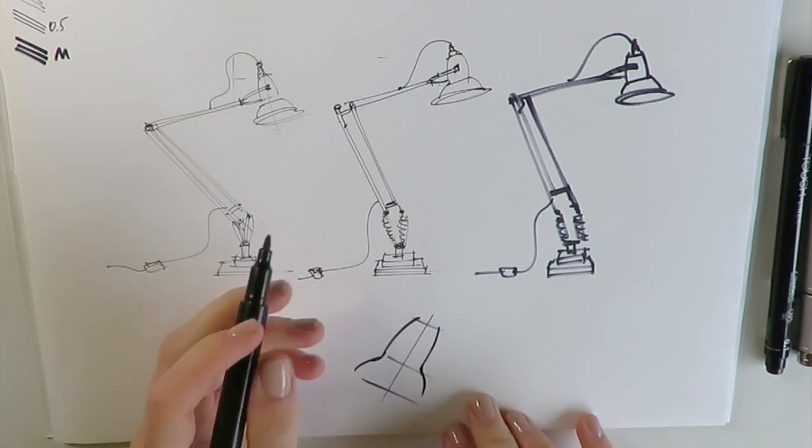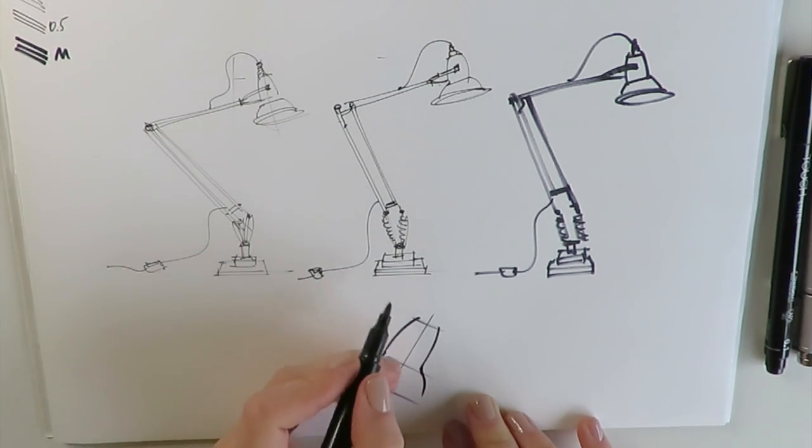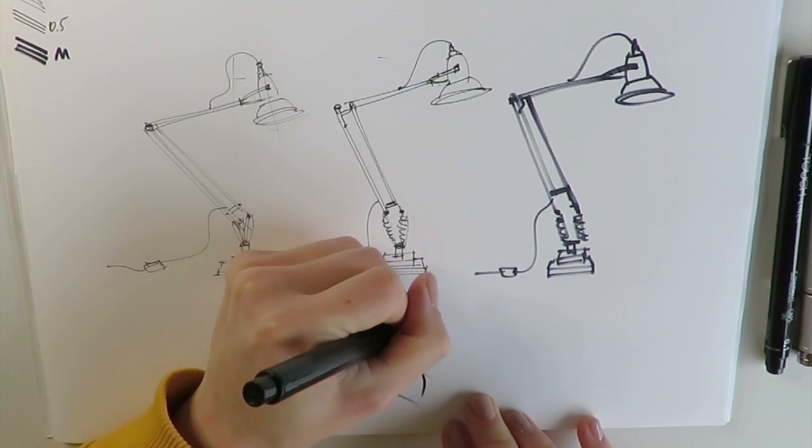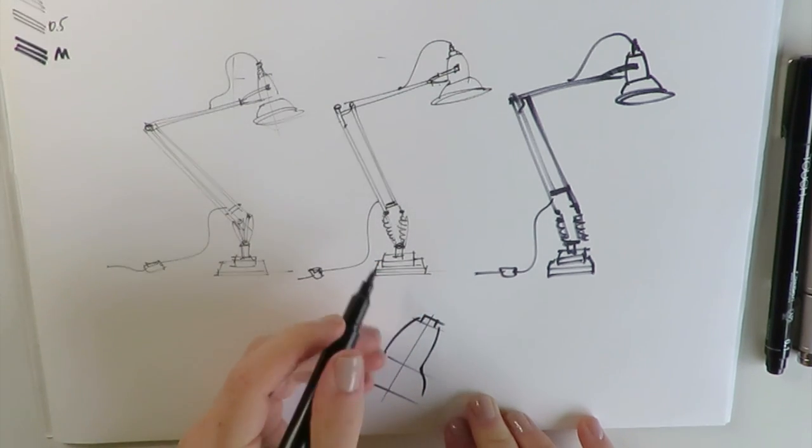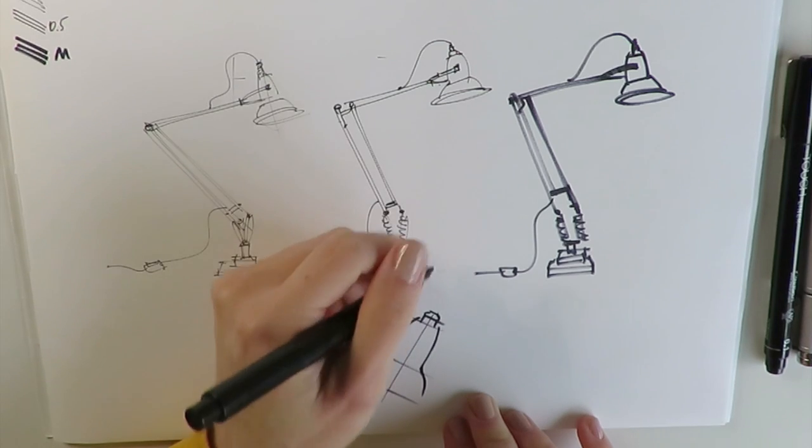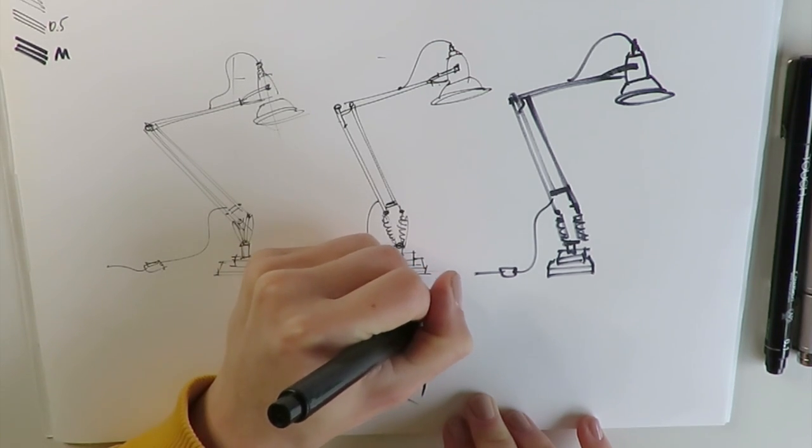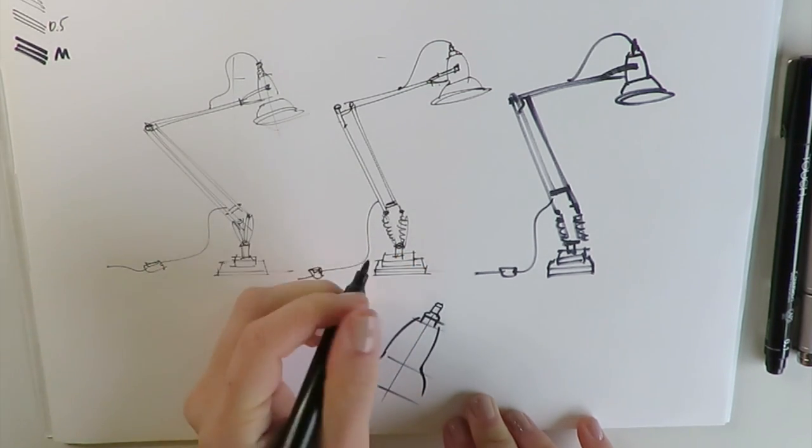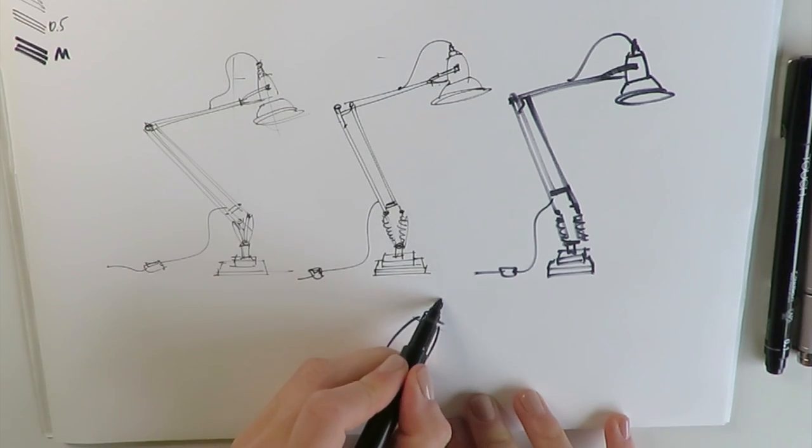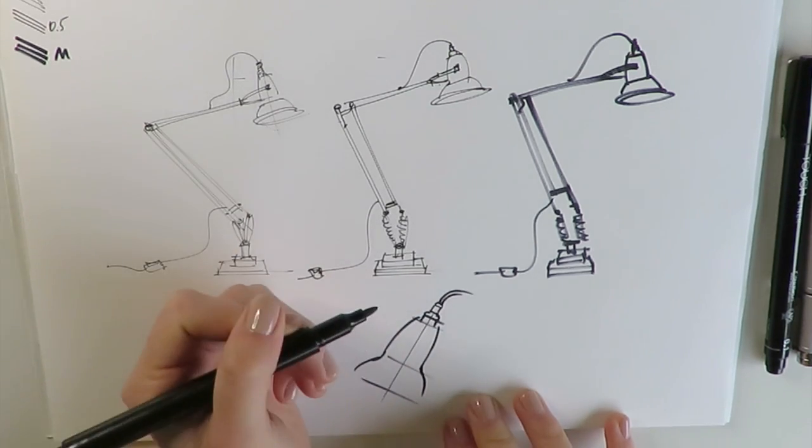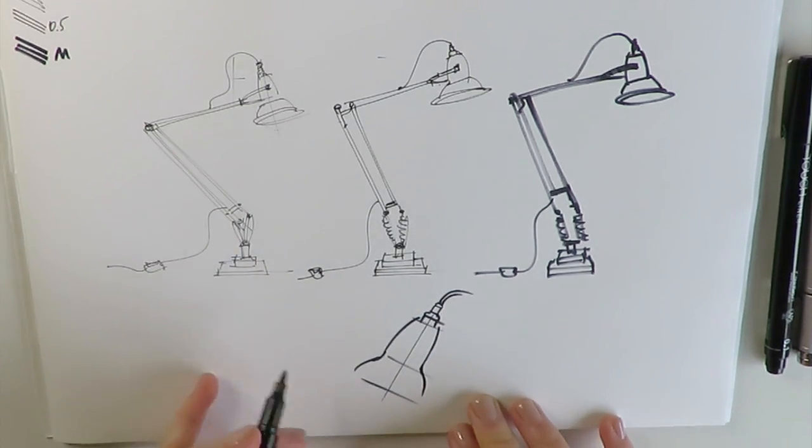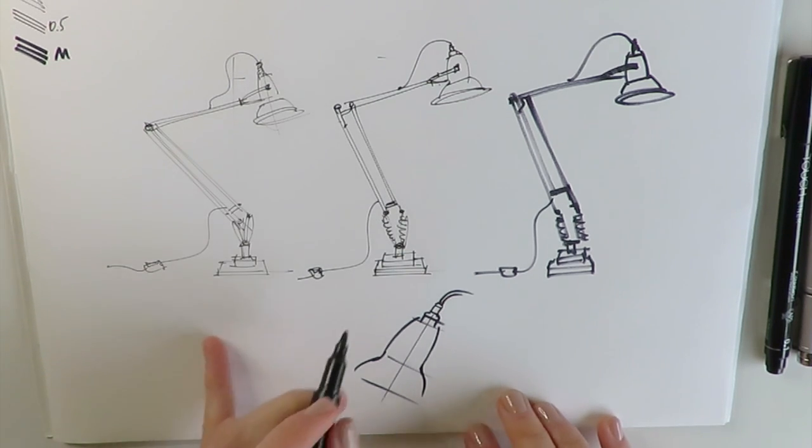So I begin with the upper part of our fixture and I'm using my thickest liner, even marker I would call this marker. Okay, our lamp shade is a symmetrical object. That's why we can draw an axis of symmetry and we can see more details.